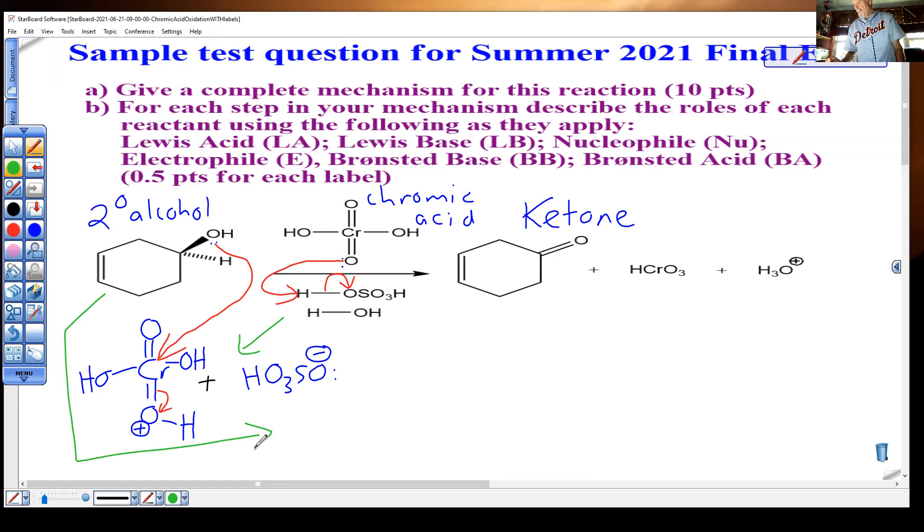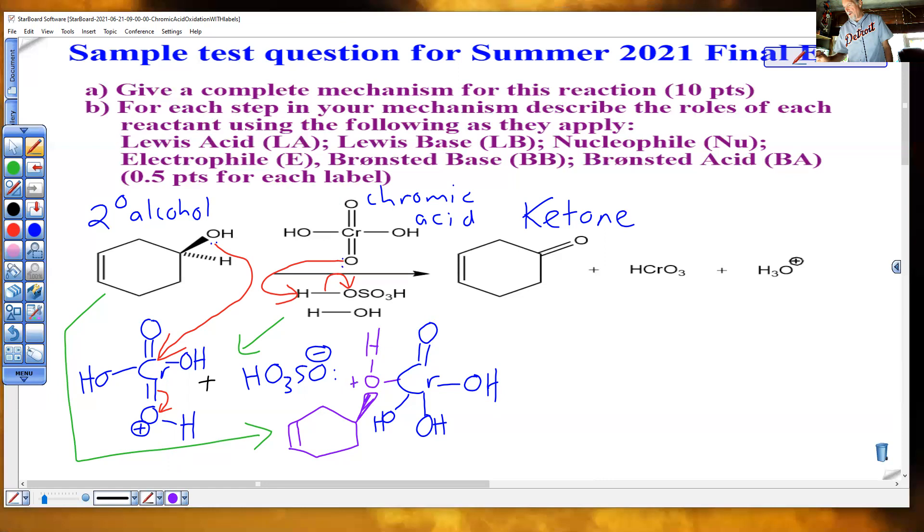So hydrogen sulfate ion is one of the products. I'll draw it here backwards for aesthetic reasons. It will use its lone pair to pick up a proton later. Chromic acid now has an activated doubly bonded oxygen with an O plus charge. This pulls electrons away from chromium even more than before, making this chromium very reactive towards even unreactive electrons.